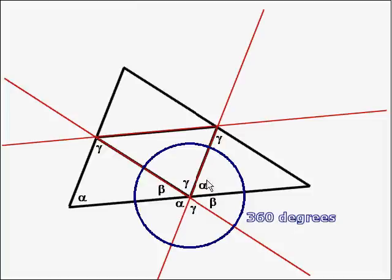But the 360 degrees is made up by alpha plus gamma plus beta plus alpha plus gamma plus beta.